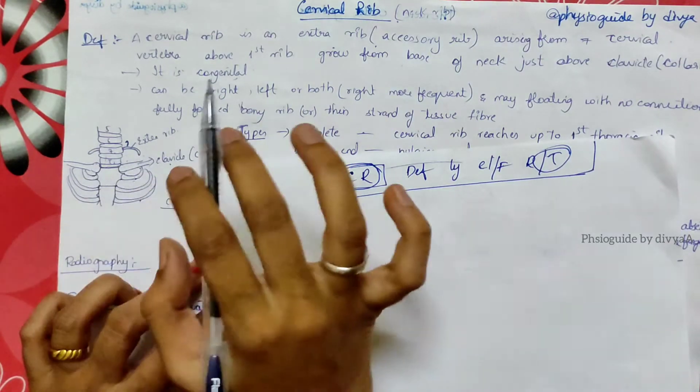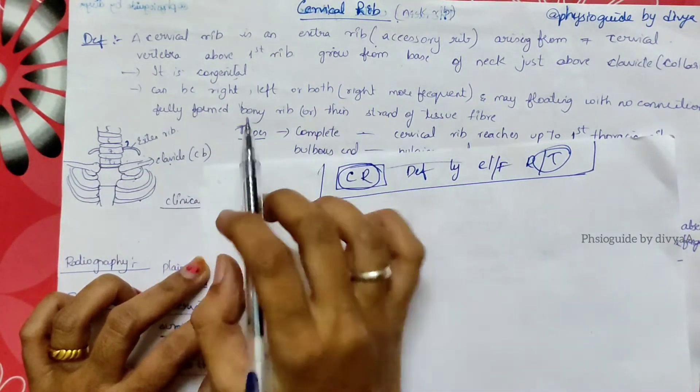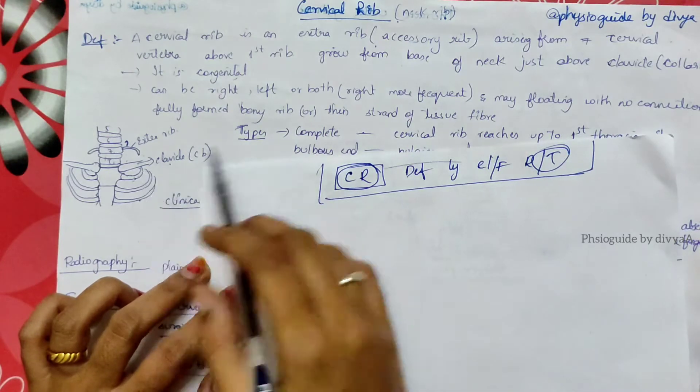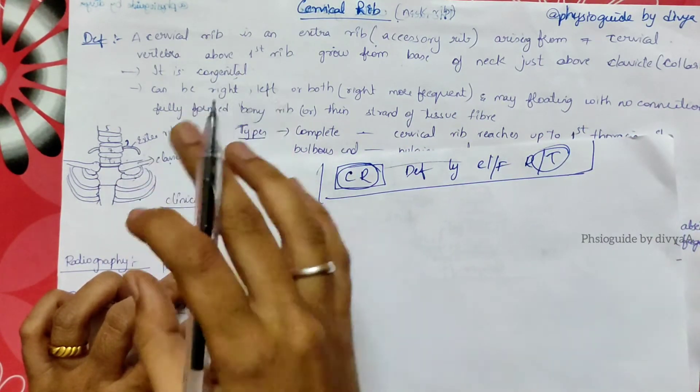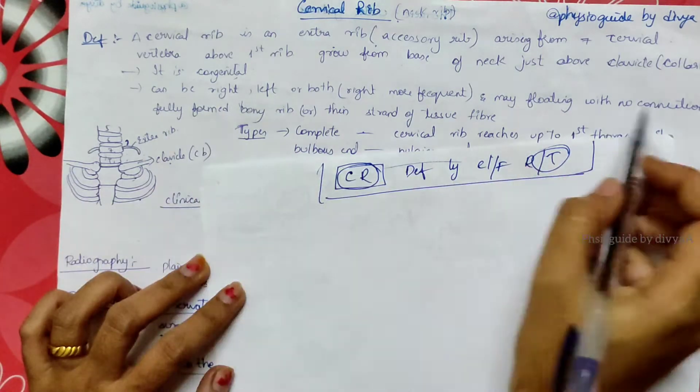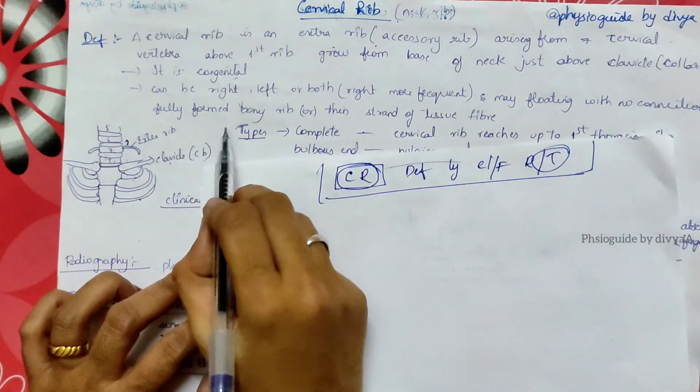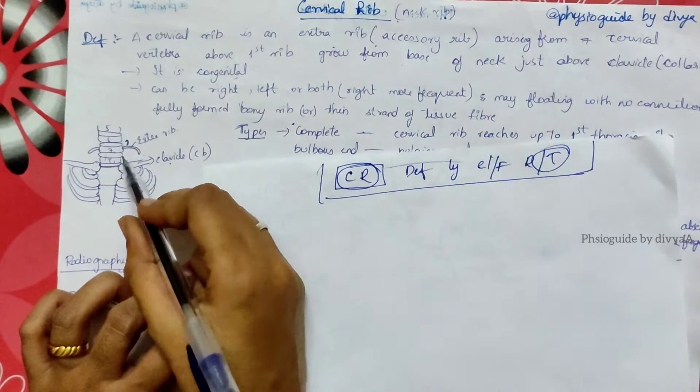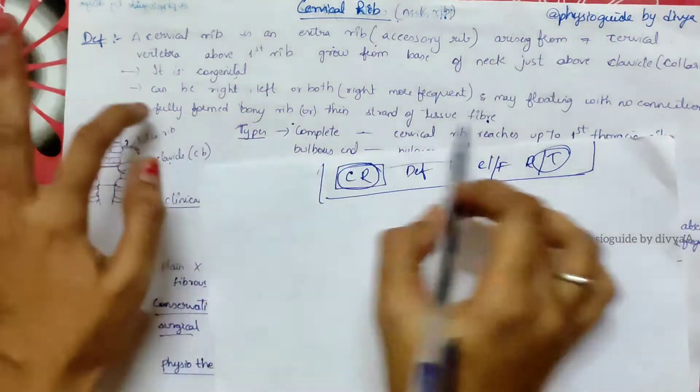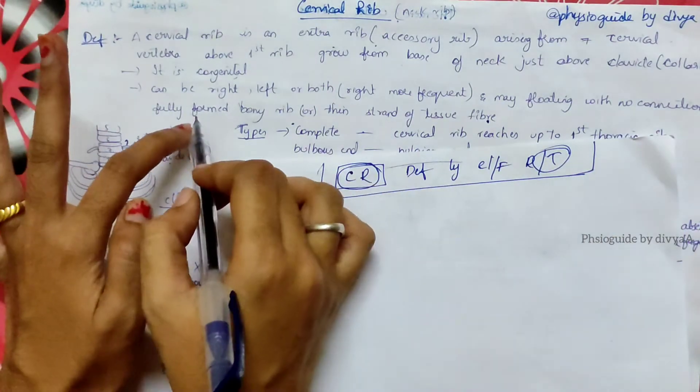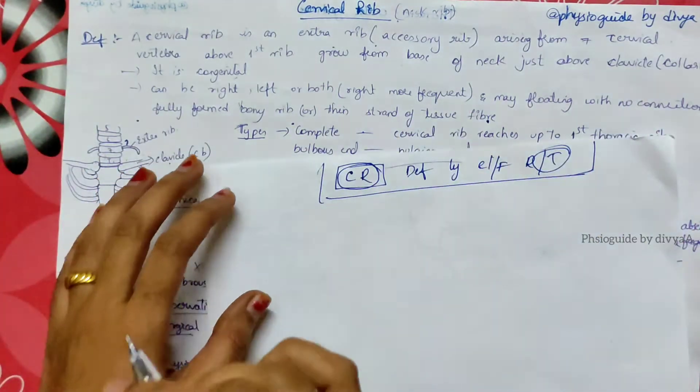It can be right side or left side, but most commonly the right side is more frequent. It may be floating with no connection, or a fully formed bone rib, or any thin strap-like fibrous tissue. This is the definition of cervical rib.